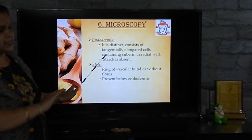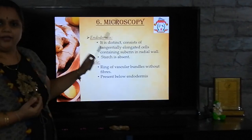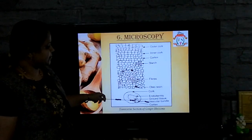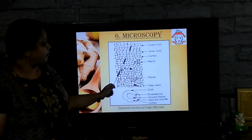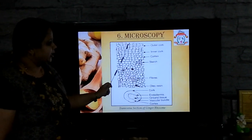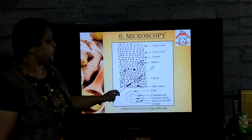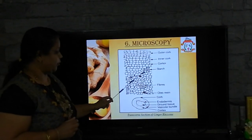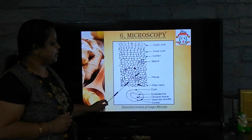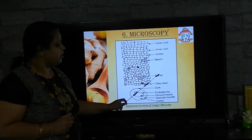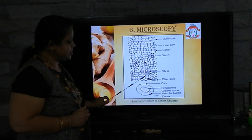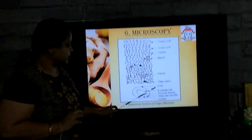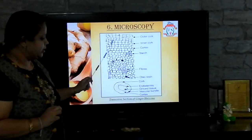Now let us discuss these features by looking at the transverse section diagram of ginger. You can see the outer cork here, which is irregular in shape, then the inner cork, and then the cortex below it. Then simple starch grains, which have hilum at the pointed end. Then the fibrovascular bundles, where xylem and phloem are associated with fibres. Then a layer of endodermis is seen, and oleoresin — like brownish pigments — can be observed in this TS. These are the most important features in the transverse section of ginger.